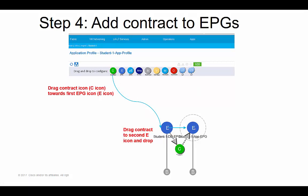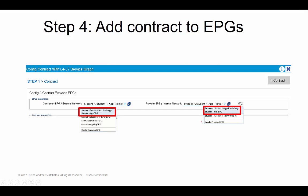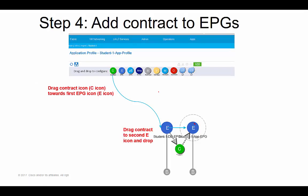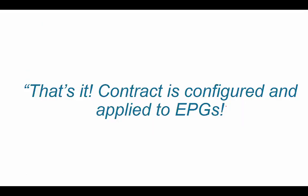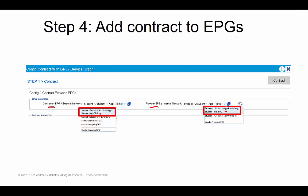After you drop the C on the second EPG, a window comes up where you can change who's the consumer and who's the provider — in case you messed up the drag and drop. In this example, the consumer EPG of the contract is the App EPG, and the provider EPG is the database EPG. The contract has been applied, and now the App EPG should be able to send traffic to the database EPG destined for port 22.